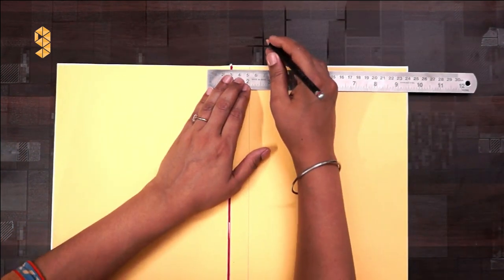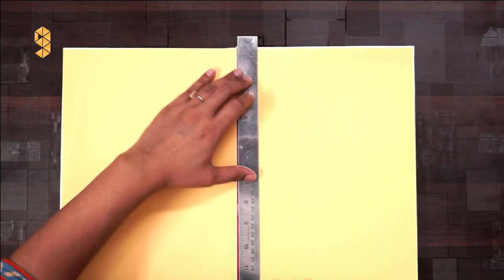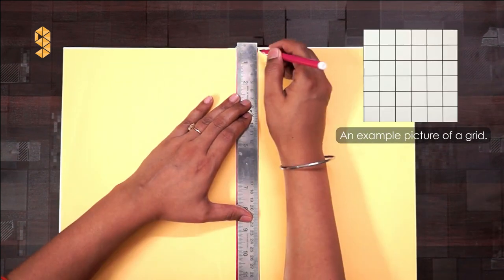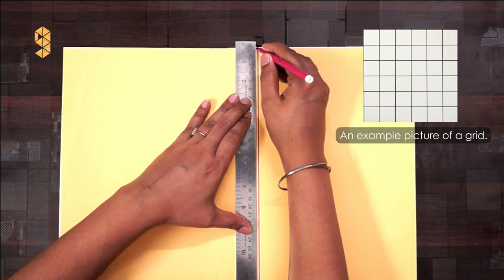Here comes an important part. We now need to make a grid inside, and we are going to make a 2x2 cm grid. You may choose a different size.